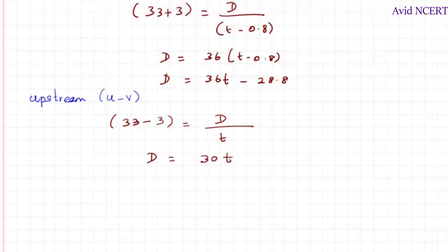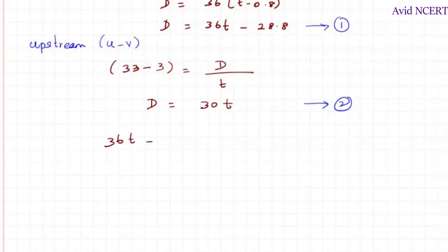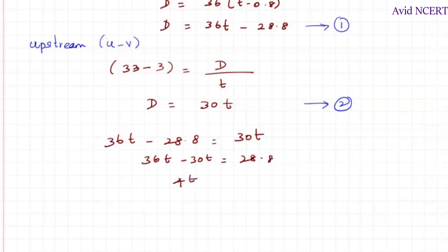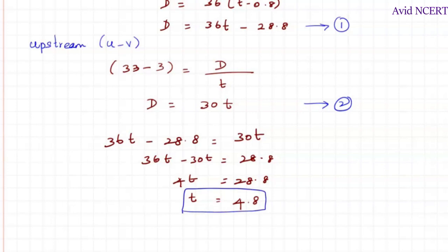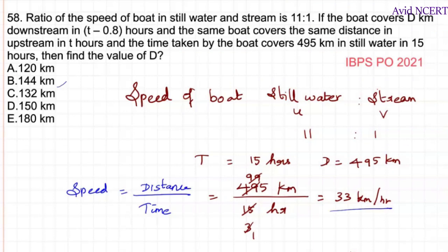Comparing the two distance equations: 36t minus 28.8 equals 30t, so 4t equals 28.8, giving t equals 4.8 hours. Substituting t into d equals 30t: d equals 30 times 4.8, which equals 144 kilometers. So the value of d is 144 kilometers.